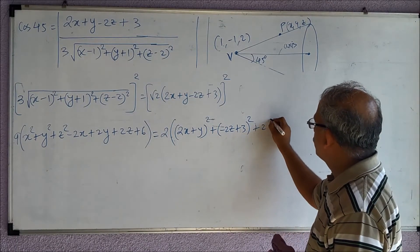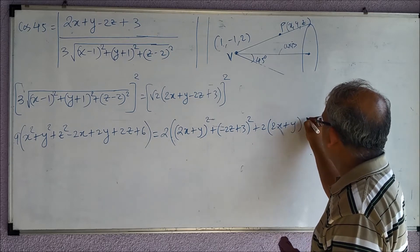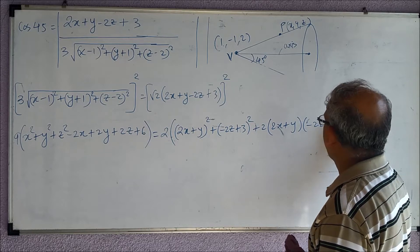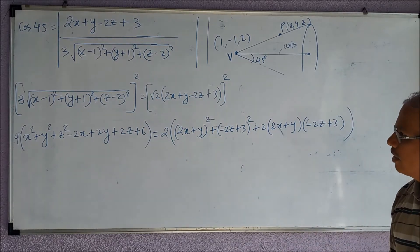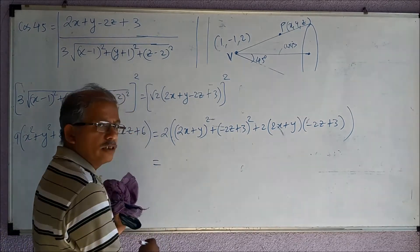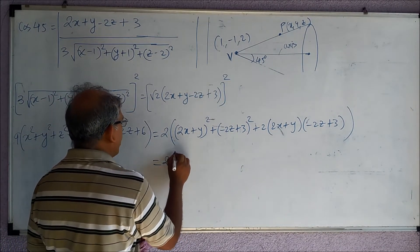Plus 2 times (2x + y)(-2z + 3). So I will keep this side as it is on this side, and I will simplify this one. So we need the bracket.